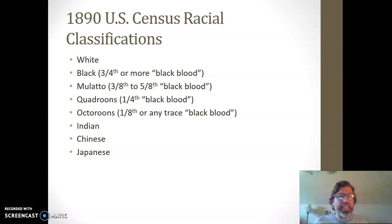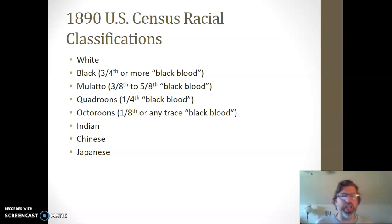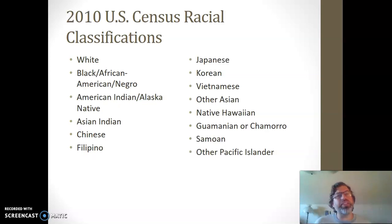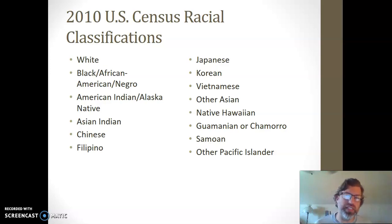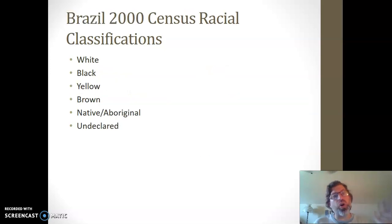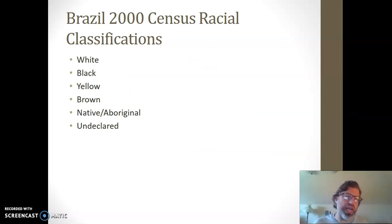Then we see Indian, and Chinese and Japanese get added to the classification — this is a moment of Chinese immigration and intense backlash to Chinese workers seen as taking white jobs. So the categories are again exploding. Then in the 2010 census, you can mark off multiple categories to self-classify. We can even look across countries at the Brazilian census in 2000, which has a whole different set of categories: white, black, yellow, brown, native, and aboriginal.